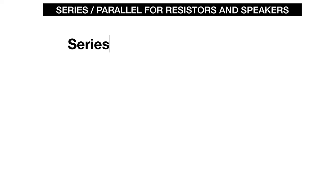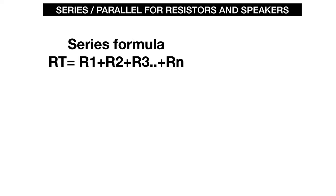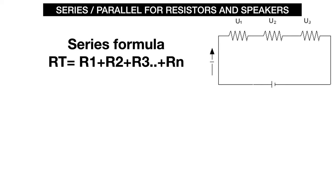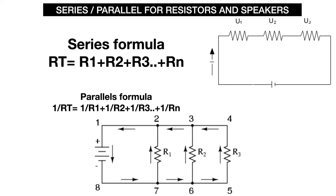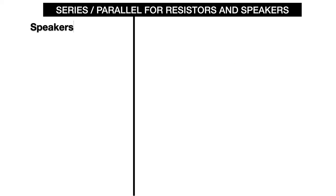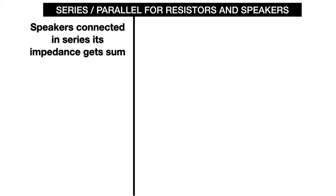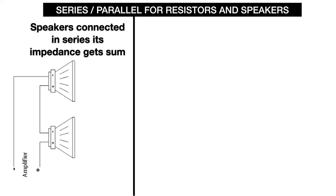Now let's talk about how to connect speakers. In a typical amplifier, if speakers are connected in series, the total resistance is the sum of all individual speaker resistances. So if your amplifier output requires 8 ohms and you have two 4-ohm speakers, you can put them in series to get a total of 8 ohms.